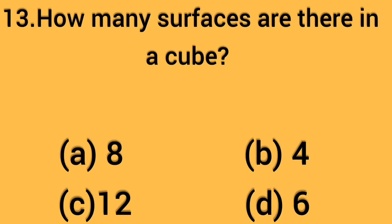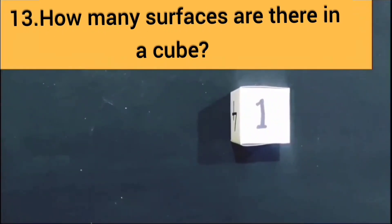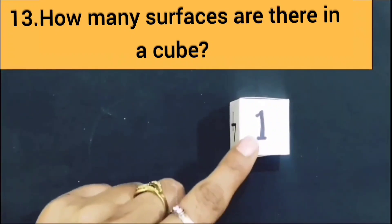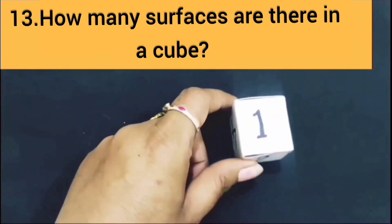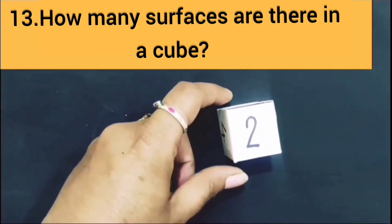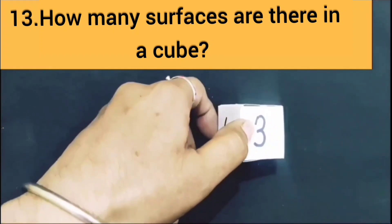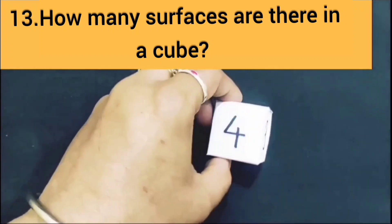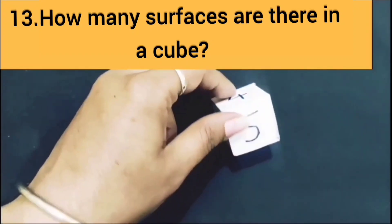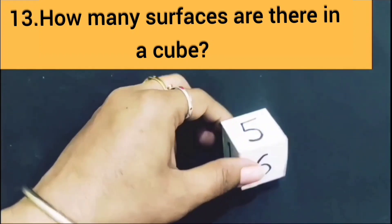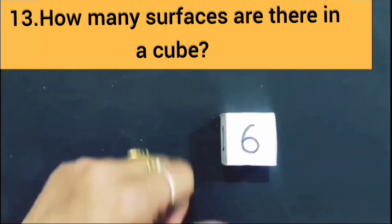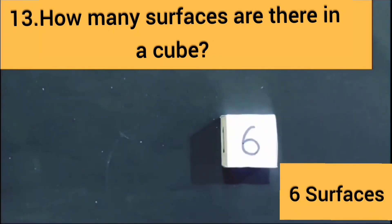The next question is: how many surfaces are there in a cube? Four options are given. I have a cube shape — let's see its surfaces: 1, 2, 3, 4, 5, 6. So a cube has 6 surfaces.